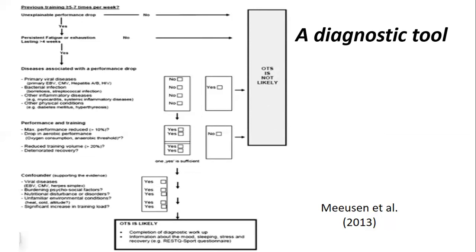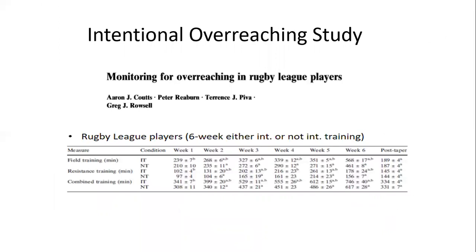Overreaching studies are hard to implement for ethical reasons, so many are observational. However, this paper on monitoring overreaching in rugby league players was really interesting. The aim was to identify markers of non-functional overreaching in team sport athletes undertaking intensive training loads. Around 18 professional rugby league players were randomly assigned into two matched groups: one completing six weeks of normal training, the other deliberately overreaching through intensified training.